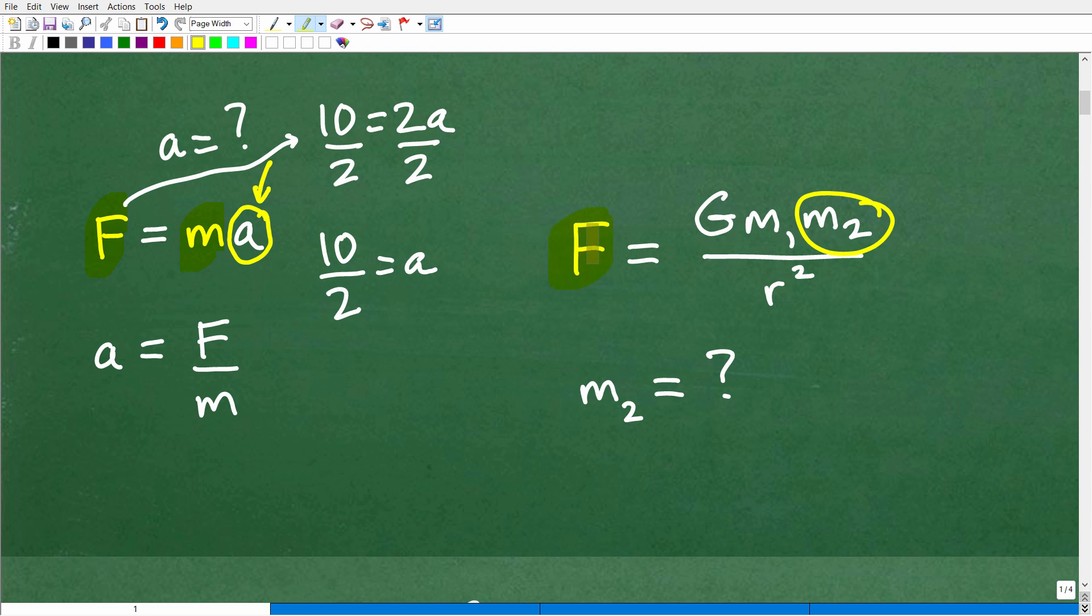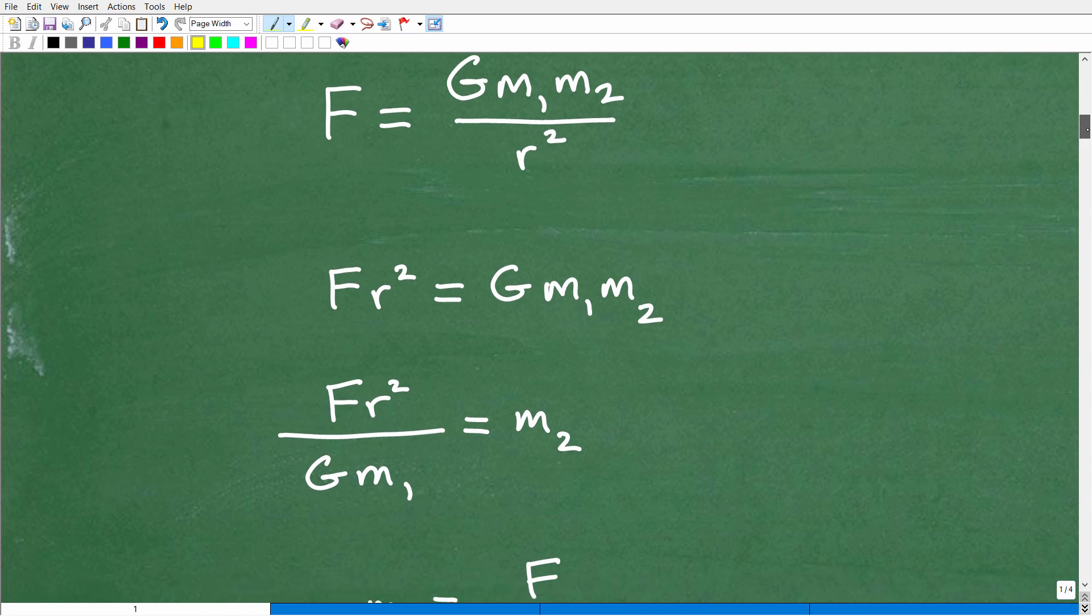So to do that, I'm going to think of F, G, m1, and r squared as numbers. So if you want to plug in some number values and think about what you would do, that could help you out. So I'm going to get into the solution right now, and you're going to be surprised that this is not that difficult.